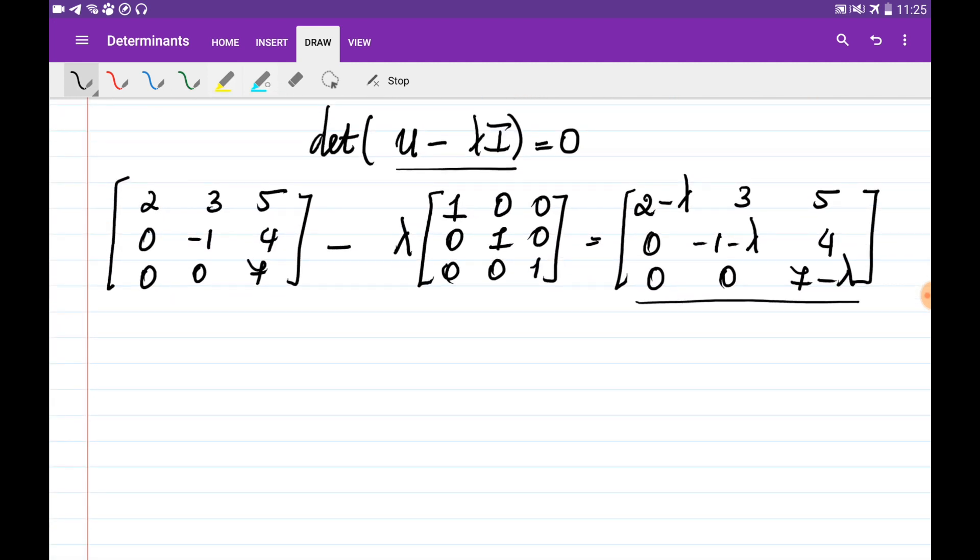The determinant of this triangular matrix is the multiplication of its diagonal entries, which is (2-λ)(-1-λ)(7-λ). And this equals 0 in three cases: when λ = 2, or λ = -1, or λ = 7, which are already on the diagonal of this matrix.